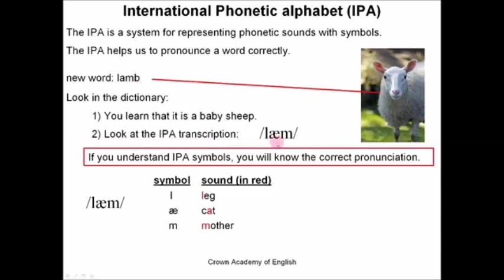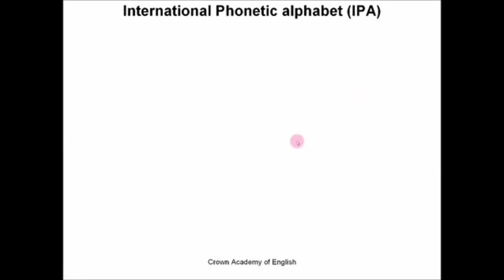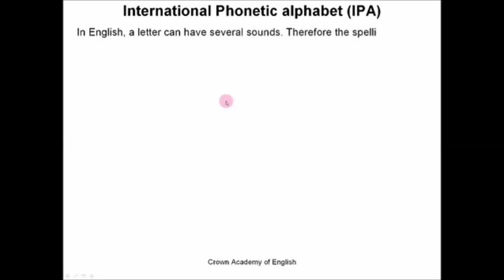Lamb. So we know that we do not pronounce the last letter B. So with IPA, we now know that the letter B is silent, and we know how to correctly pronounce the word. In English, a letter can have several sounds. Therefore, the spelling of a word does not help us know the correct sound.